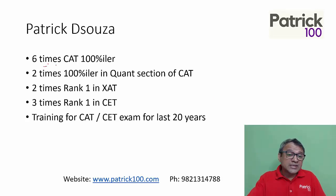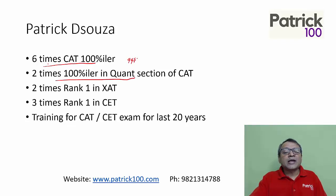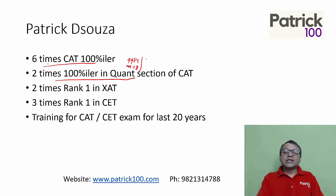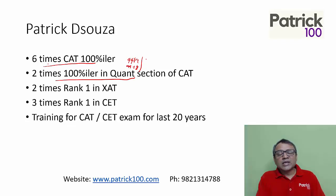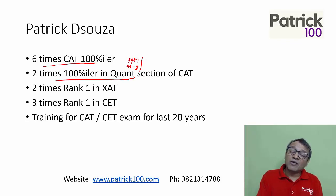I have scored 100 percentile six times in CAT. I have scored twice 100 percentile in CONT, and a number of times 99.99 and 99.98 percentile in the CONT section. So fairly comfortable in terms of how to crack the CONT section. I am normally able to solve all the sums that come in the exam, though I do make a couple of silly mistakes, but tend to solve all the questions in the given time frame.